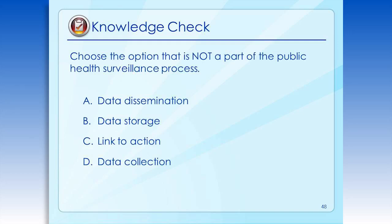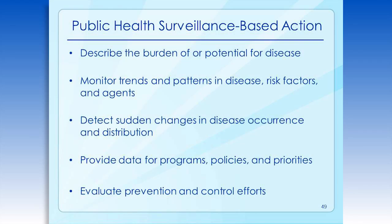Last knowledge check: which of the below is not part of a public health surveillance process — A, B, C, or D? The answer is B — data storage. Finally, surveillance-based action includes at least five steps: describing the burden or the potential for disease; monitoring trends or patterns in disease; looking at risk factors and agents; detecting sudden changes in disease occurrence and distribution; and providing data for programs, policies, and priorities; and evaluating prevention and control efforts.